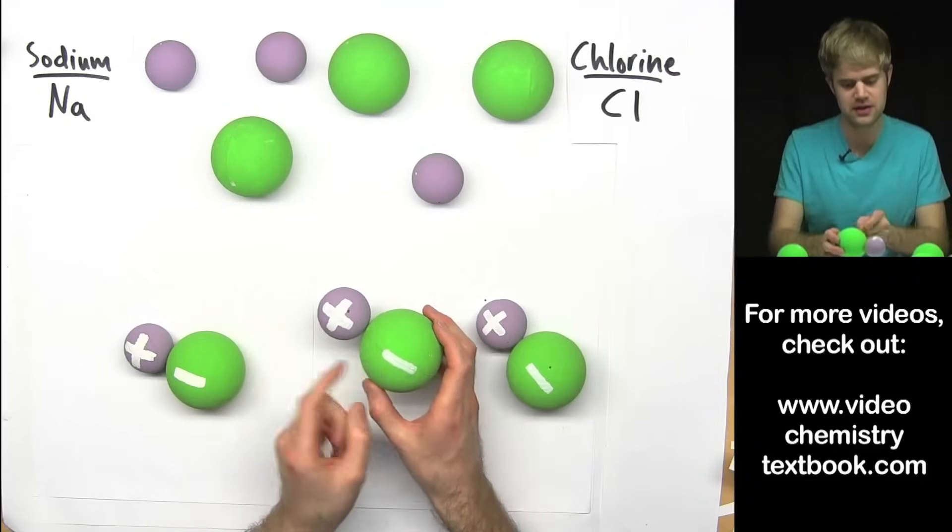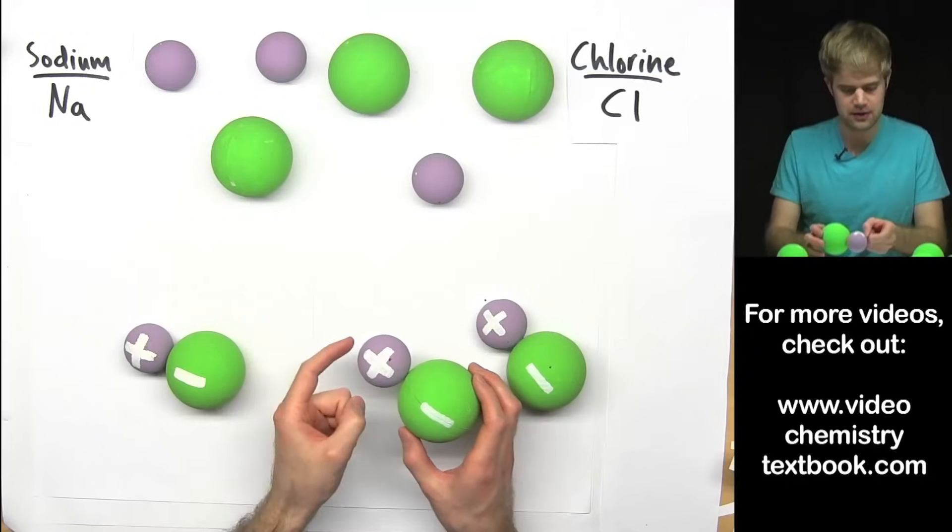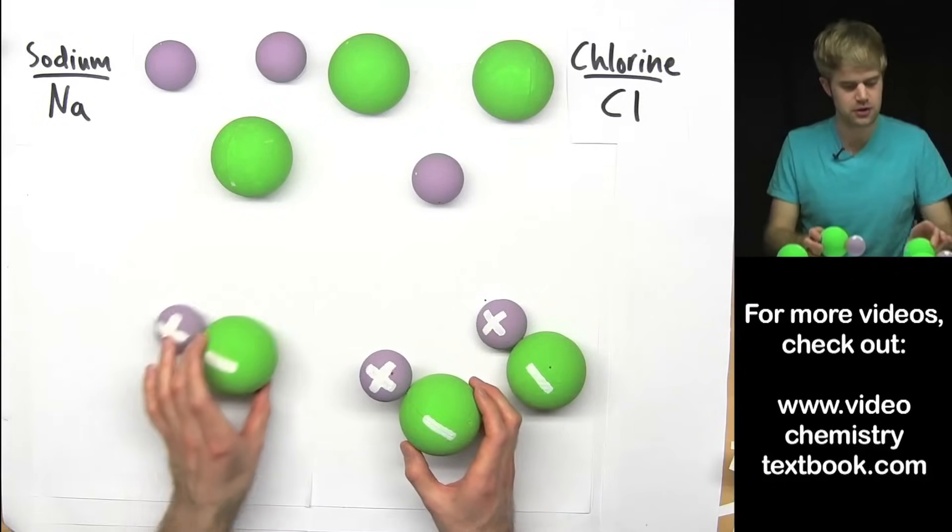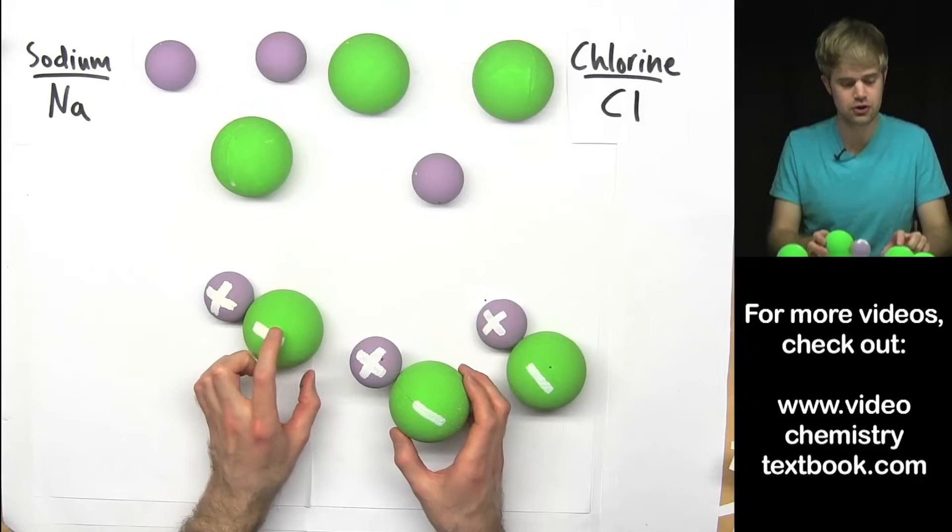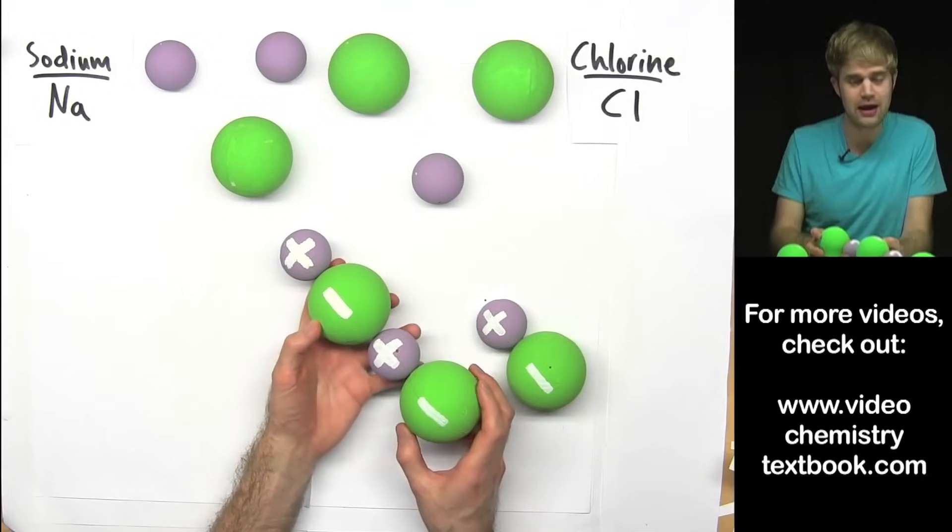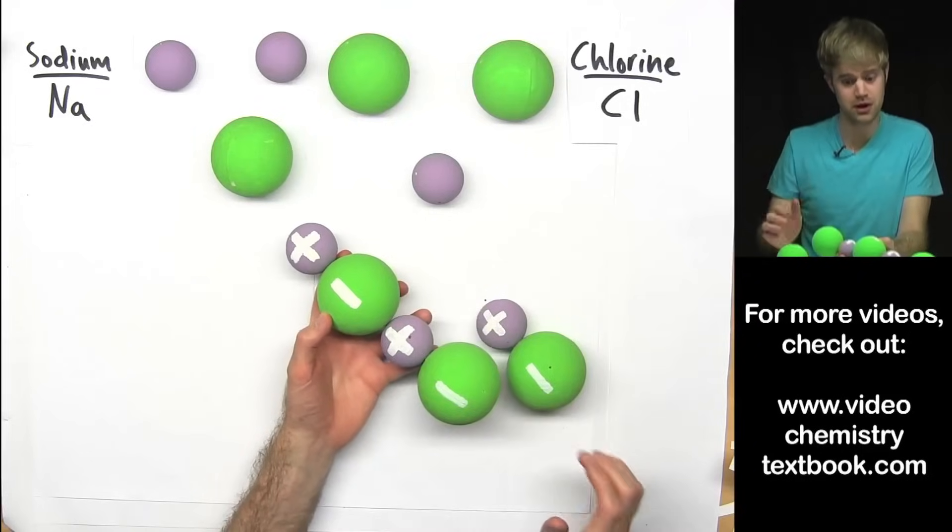They wouldn't stay separate because opposite charges attract not only in groups of two. So this positive and this negative, they're attracted to each other. But this positively charged sodium will also be attracted to this negatively charged chloride over here.